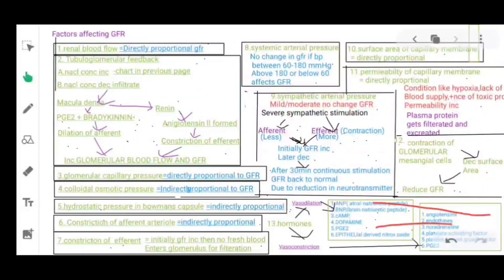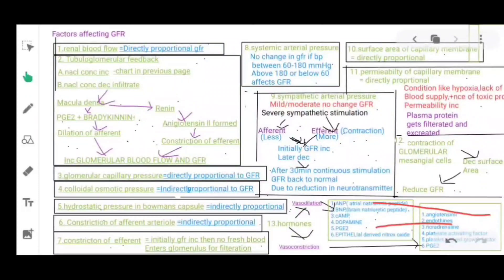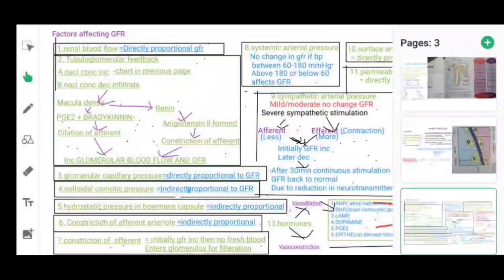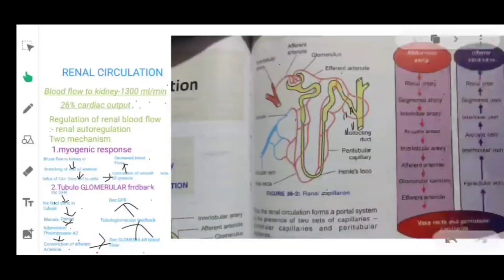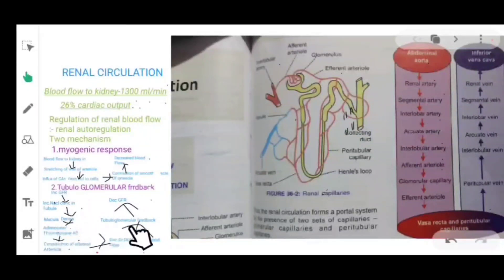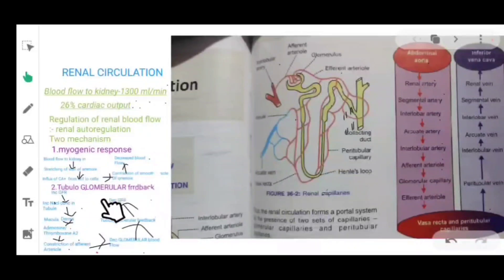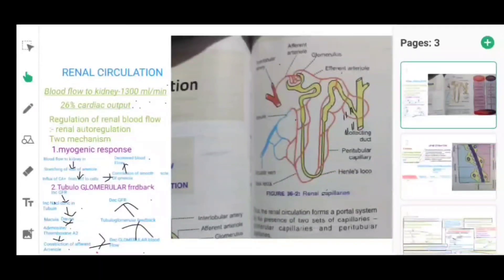If sodium chloride concentration increases, the macula densa gets stimulated and secretes adenosine and thromboxane A2, which leads to constriction of the afferent arteriole, finally leading to a decrease in glomerular blood flow and a decrease in GFR.